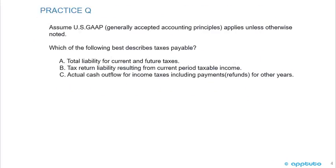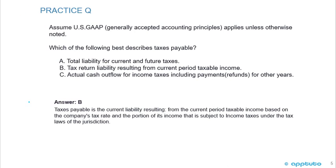Practice question: Assume U.S. GAAP applies unless otherwise noted. Which of the following best describes taxes payable? A) Total liability for current and future taxes. B) Tax return liability resulting from current period taxable income. Or C) Actual cash outflow for income taxes including payments and refunds for other years. The correct answer is B. Taxes payable is the current liability resulting from the current period taxable income, based on the company's tax rate and the portion of its income subject to income taxes under the tax laws of the jurisdiction.